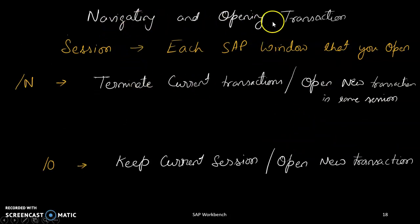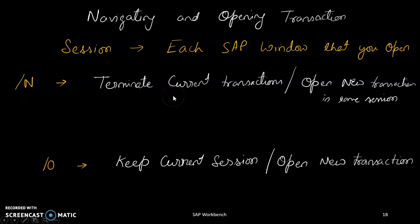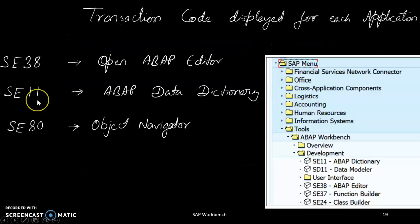For navigation, you can open multiple screens. Each SAP window you open is called a session. When you type /n followed by a transaction code (e.g., /n SE93), it terminates the current session and opens a new one. Using /o keeps the previous screen open and opens a second screen alongside it.